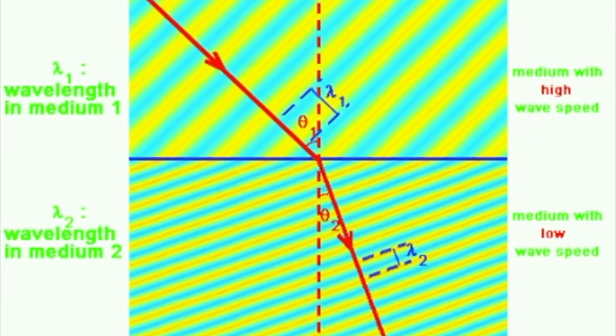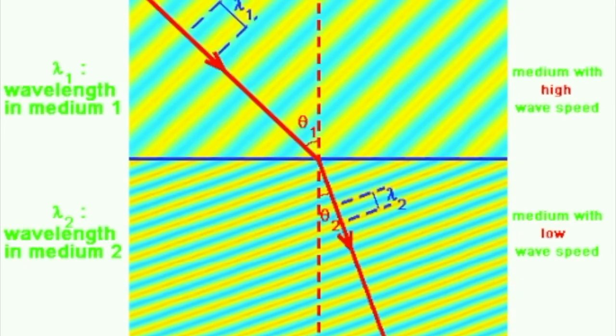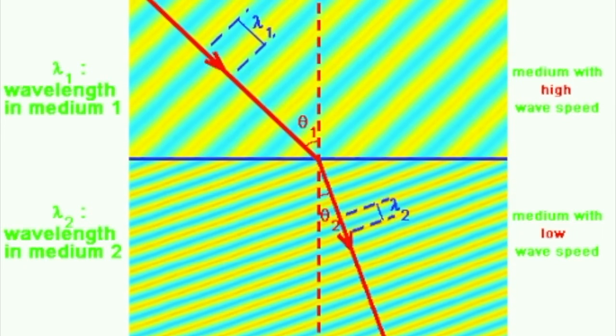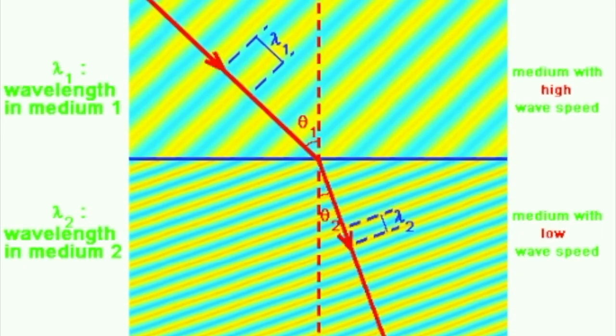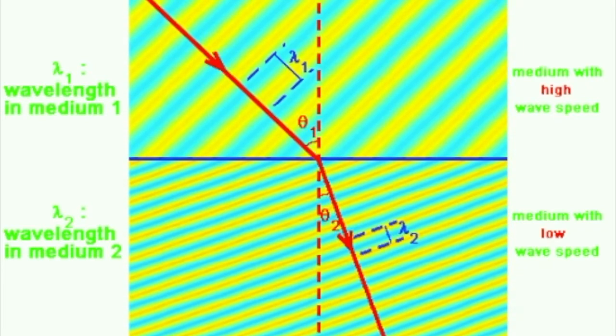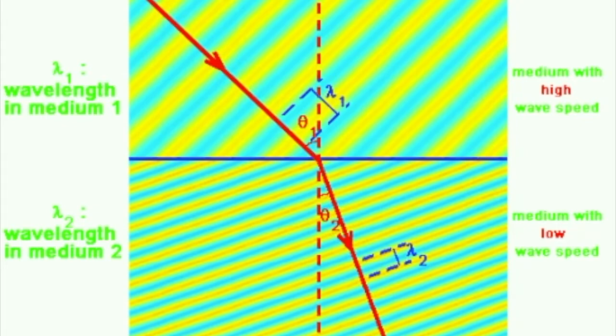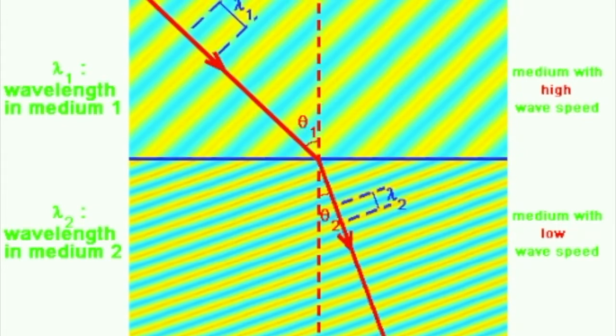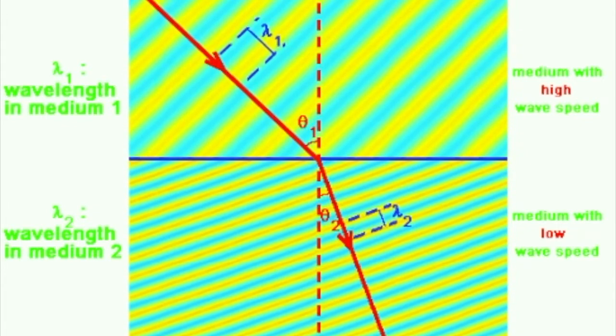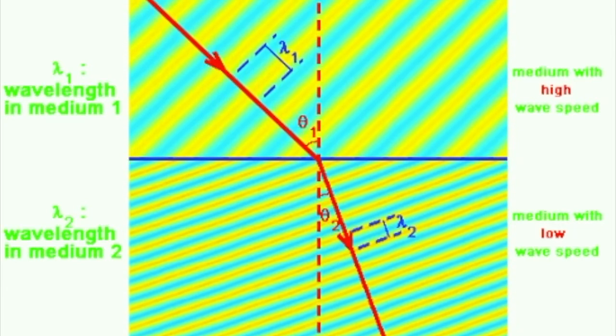And you can see why that is. As a wave crosses the barrier, the part on the left is going to cross the barrier sooner and slow down sooner. The part on the right is going to be traveling farther at the fast speed, so it's going to have moved farther ahead. So the direction of the wave fronts will change correspondingly.